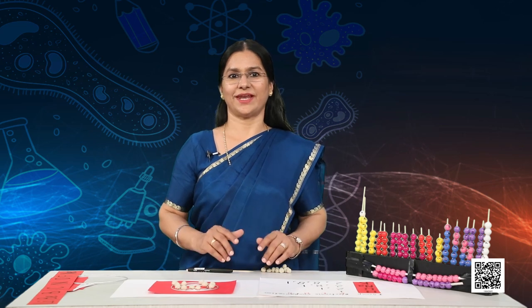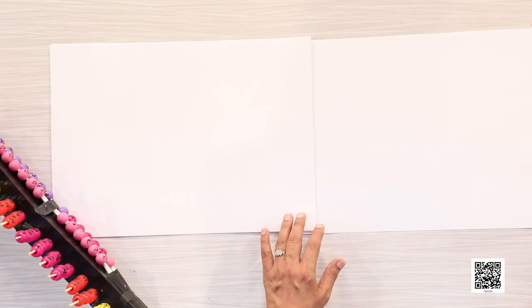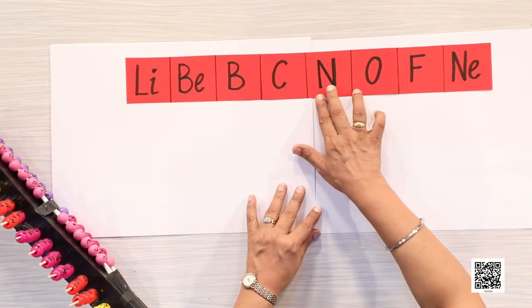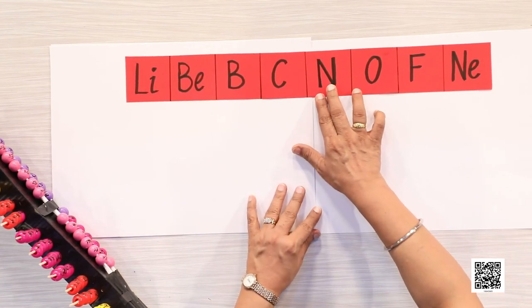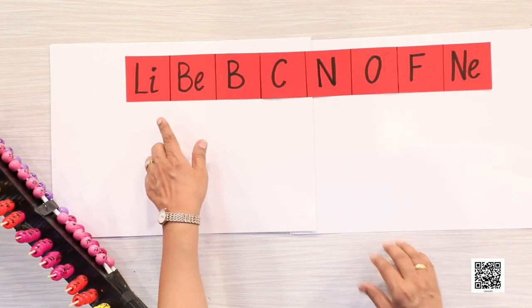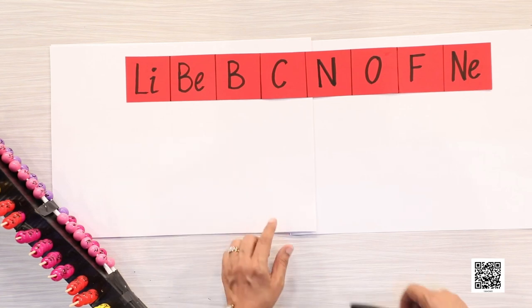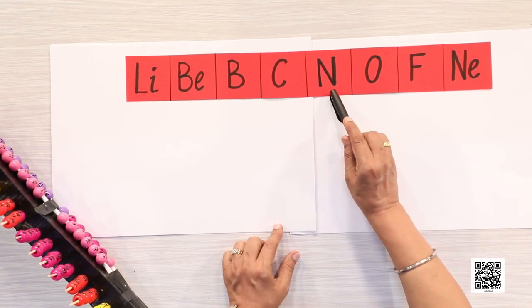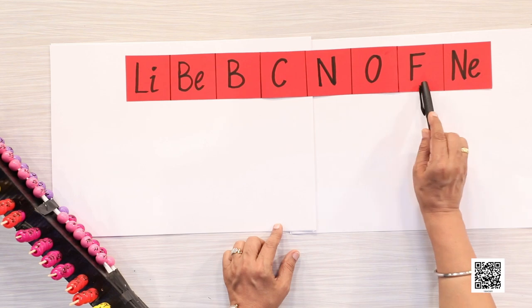The elements in the second period are: lithium, beryllium, boron, carbon, nitrogen, oxygen, fluorine, and neon. Let's now develop and write down their electronic configurations.